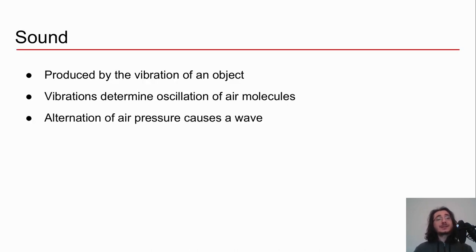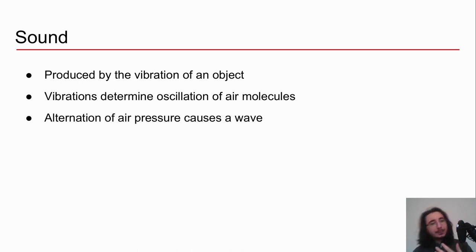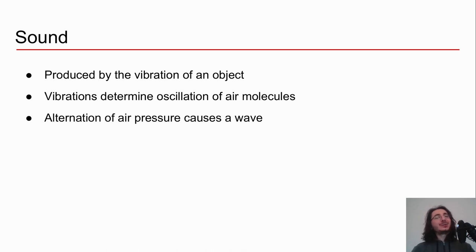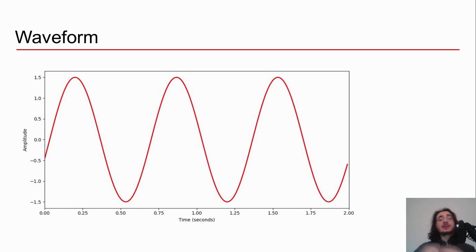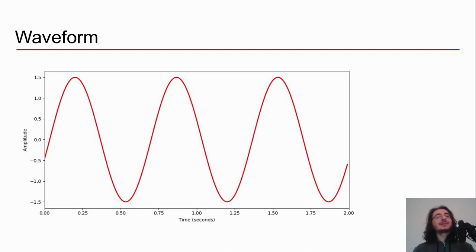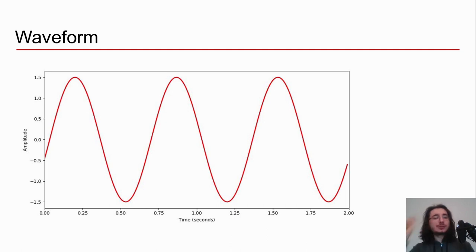So first question: what is sound? Well, sound is produced when there's an object that vibrates, and those vibrations determine the oscillation of air molecules, which creates an alternation of air pressure. This high pressure alternated with low pressure causes a wave. We can represent these waves using a waveform — a wave that oscillates and can be represented using amplitude and time.